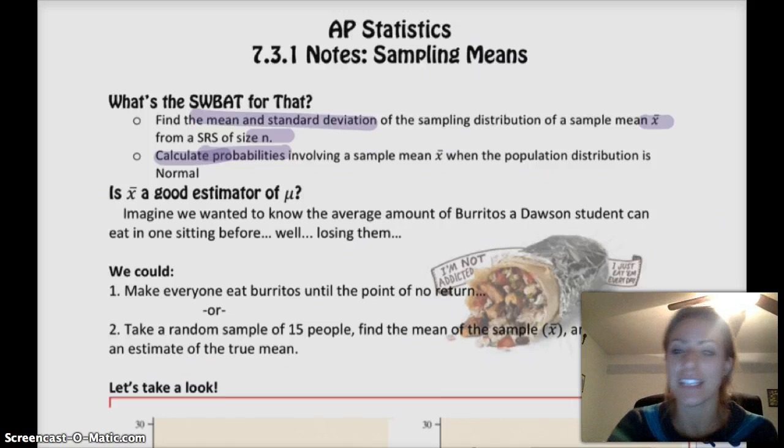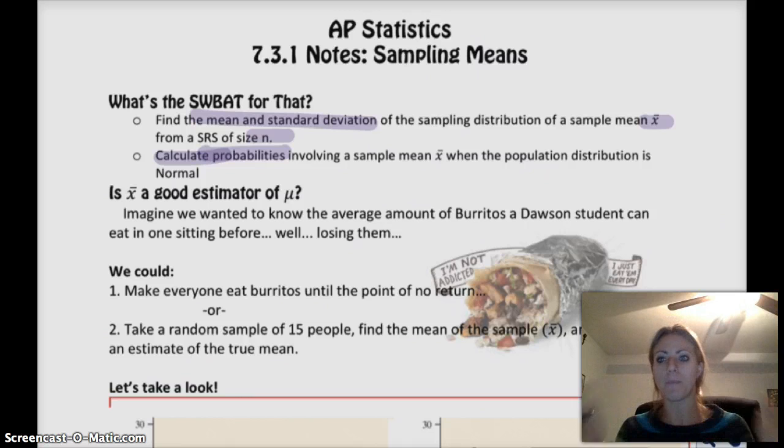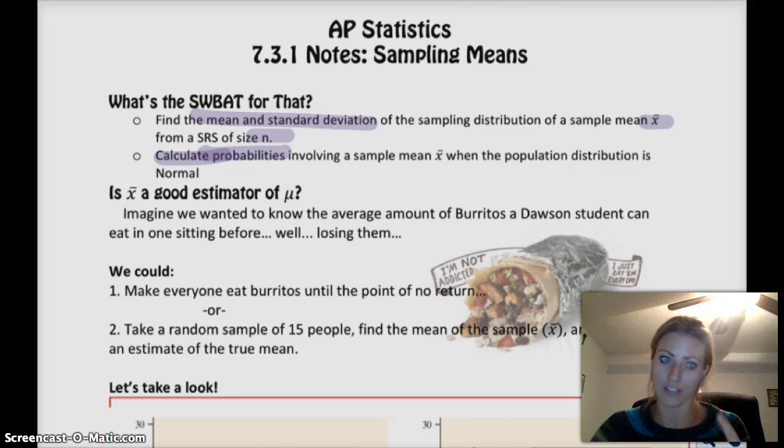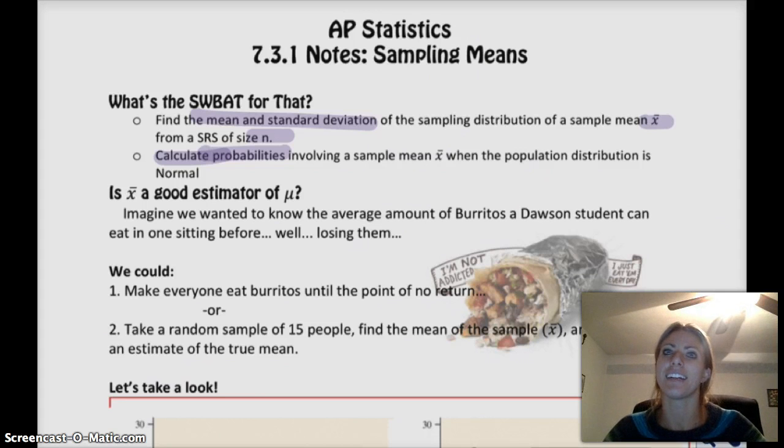And then we'll probably, hopefully, be able to calculate some probabilities after we do that as well, after we make certain assumptions or kind of figure out if our sampling distribution is approximately normal. So we've got to prove that first before we can do any normal calculations, unfortunately. Okay, so is x-bar a good estimator of mu? Well, picture the scenario. We want to figure out the average amount of burritos a Dawson student can eat in one sitting before having to throw them back up.